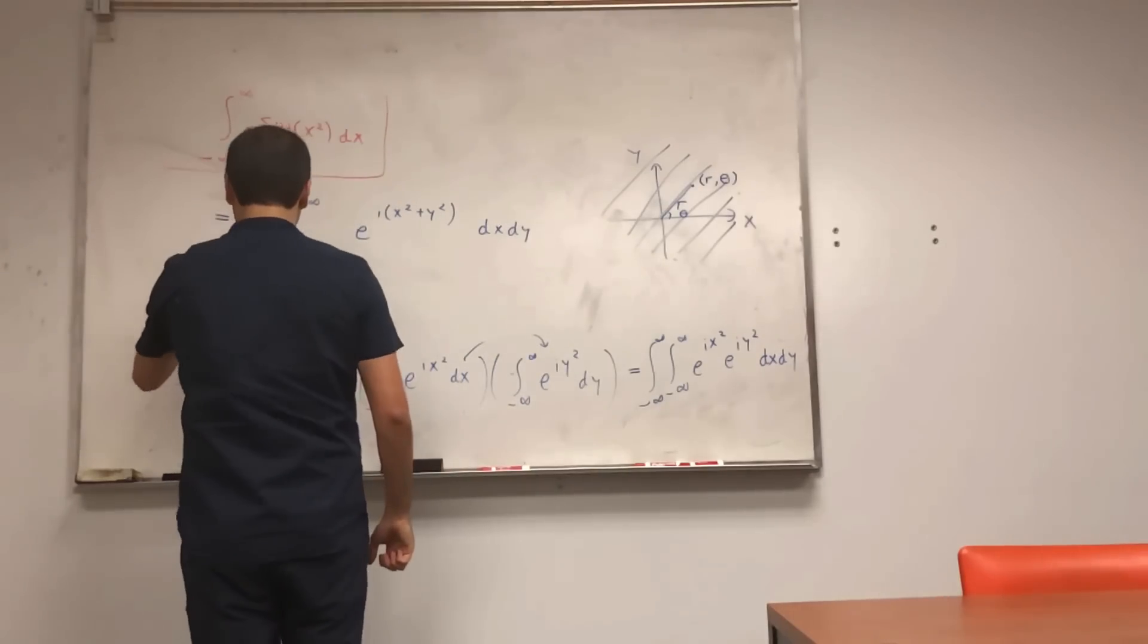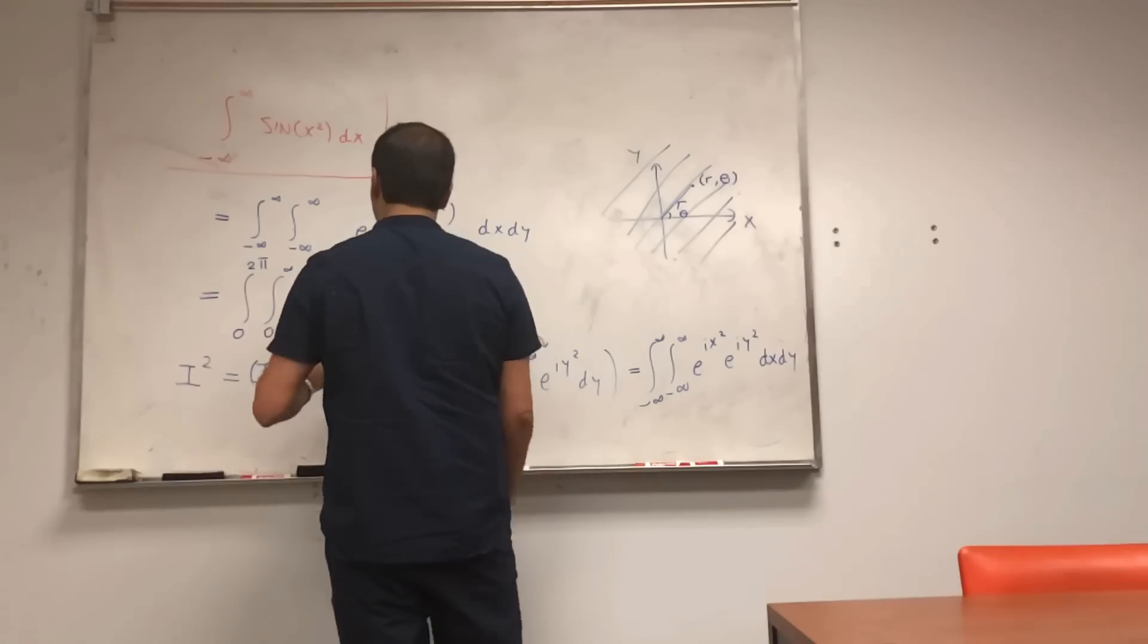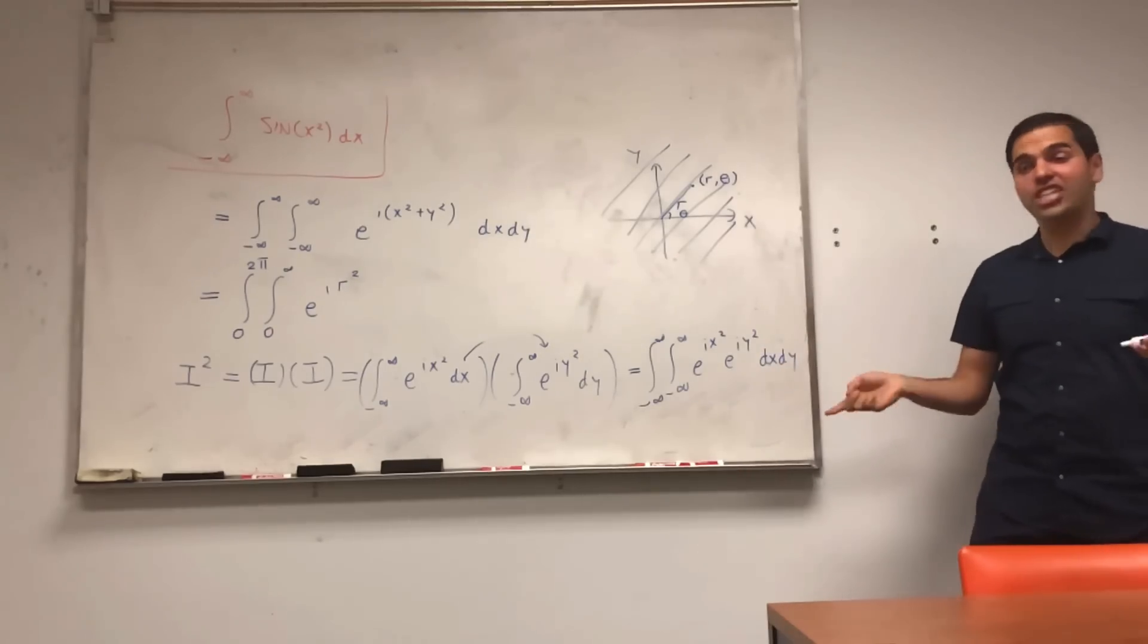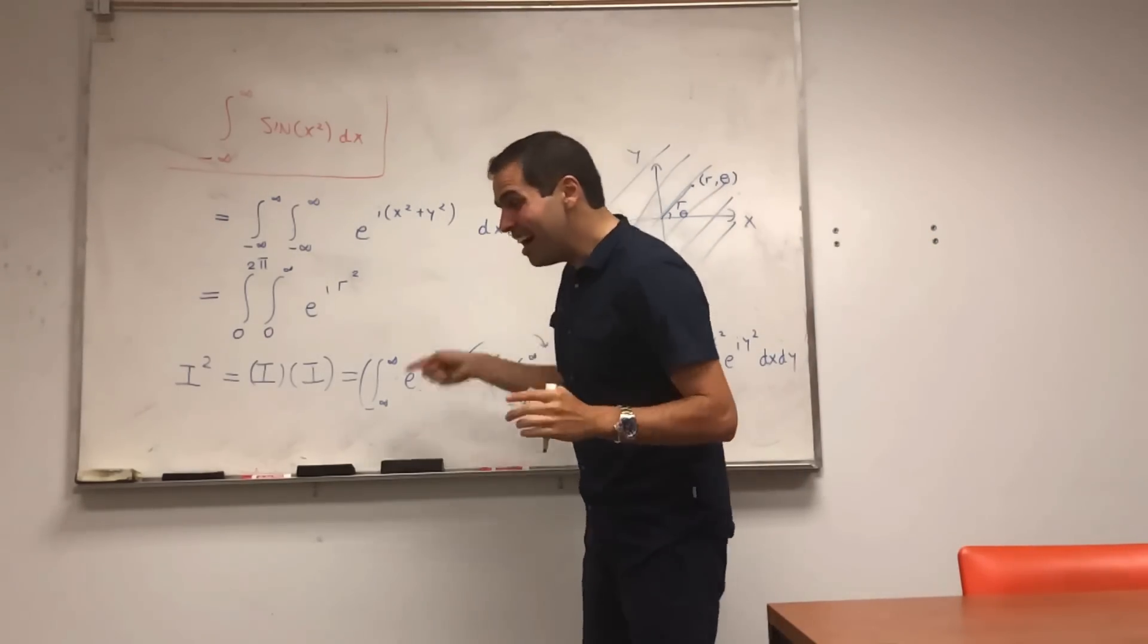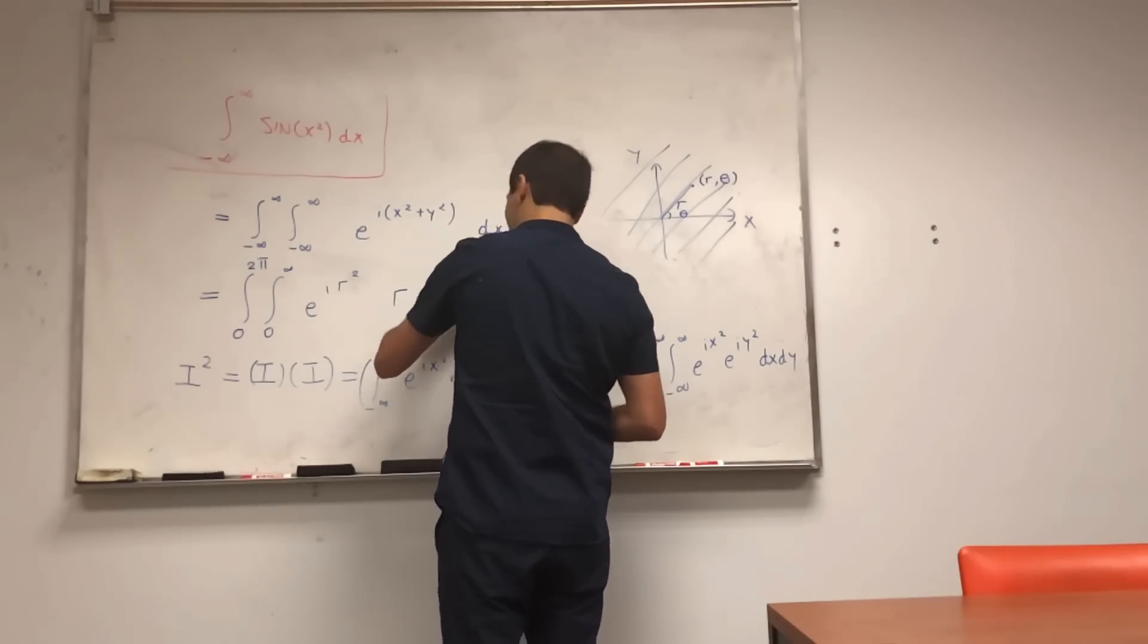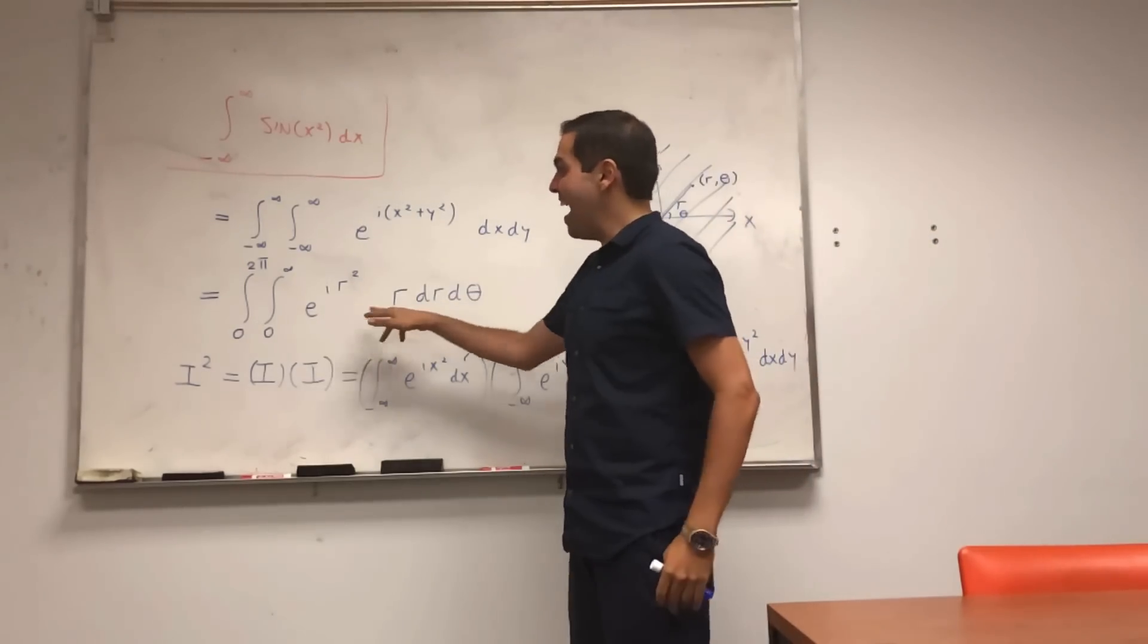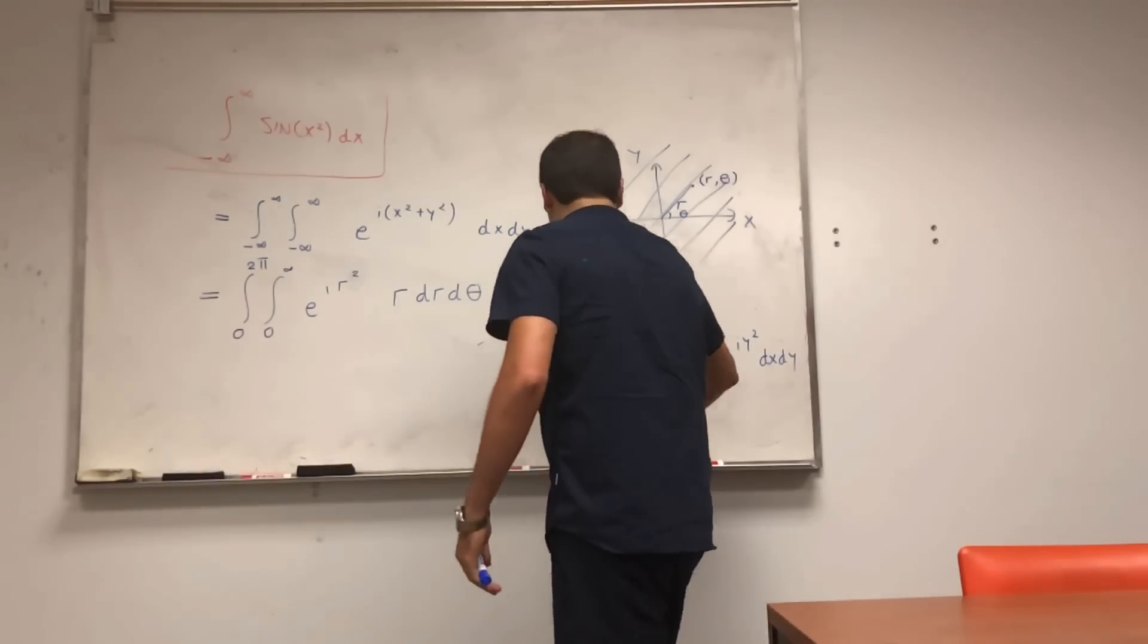And so we're left with integral from zero to two pi, integral from zero to infinity, of e to the i r squared. And then if you do the Jacobian business, you get a dr d theta, but with an extra factor of r, r dr.